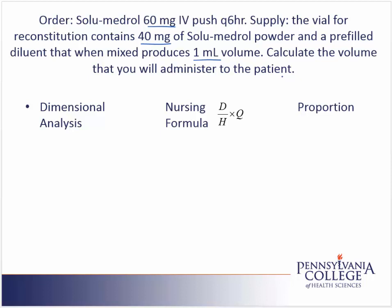We'll look at this problem using the three methods that can apply to dosing problems. First we'll look at dimensional analysis. In dimensional analysis we always start with the order — in this case 60 mg — and place it over 1. Next we'd like to cancel the mg, so we'll place the mg on the bottom of the fraction.